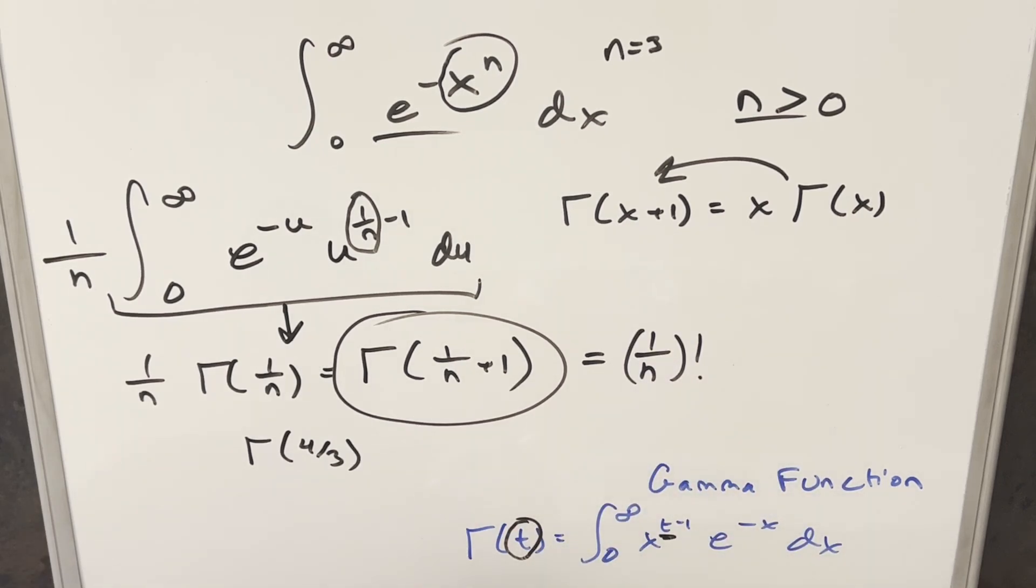Depending on your perspective, this could be a problem. Like in that previous video, gamma of 4/3 could be written as (1/3)!.